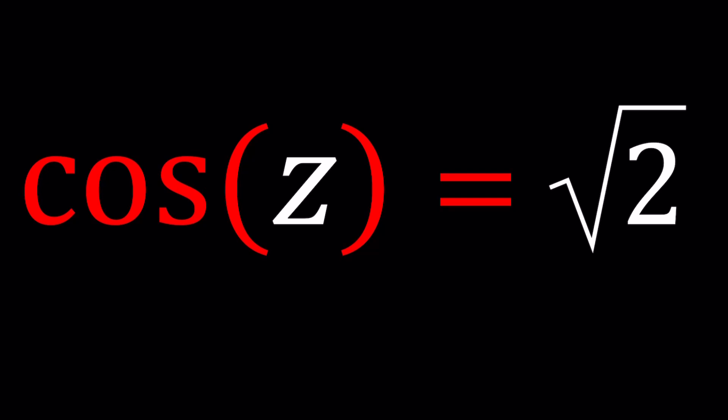Wait a minute, what does this have to do with complex numbers? Let's see what happens. We have cosine of Z equals square root of 2, and we're going to be solving for Z values.